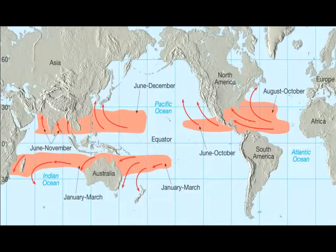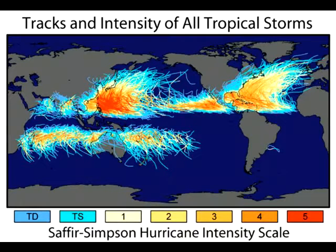Hurricanes form over tropical oceans between 5 degrees and 20 degrees latitude. While we here in the United States are particularly concerned about hurricanes in the Atlantic basin, this illustration shows that the western Pacific is particularly strongly affected by intense typhoons.